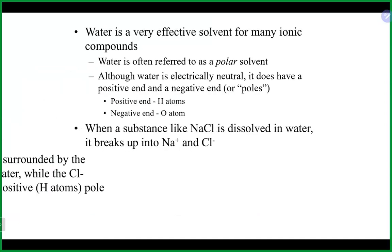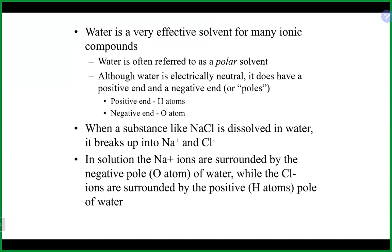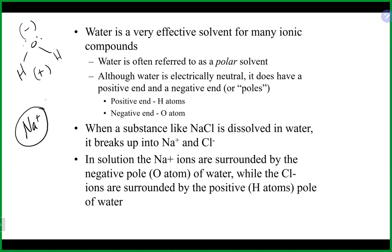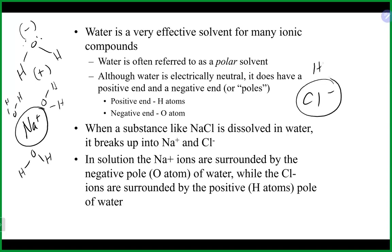Water is a pretty safe bet as the solvent for most ionic compounds. Water is a really good solvent because it's a polar molecule — the oxygen side is more negative and the hydrogen side is more positive. When we dissolve something ionic, it works really well because a positive ion like sodium will be surrounded by the oxygen side of water, while a negative ion like chloride will be attracted to the hydrogen side of water. That is essentially how sodium chloride dissolves in water.